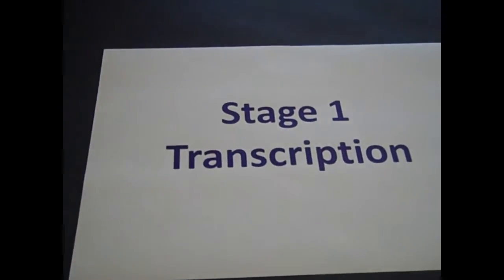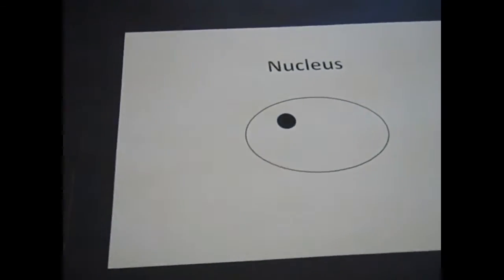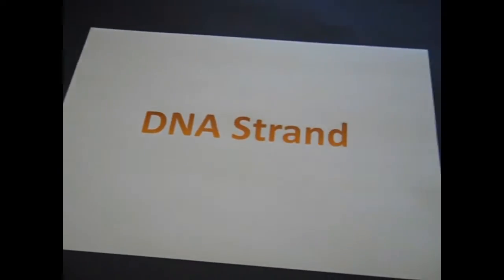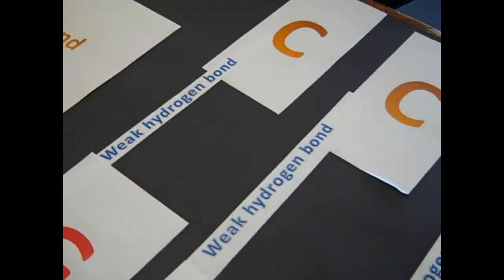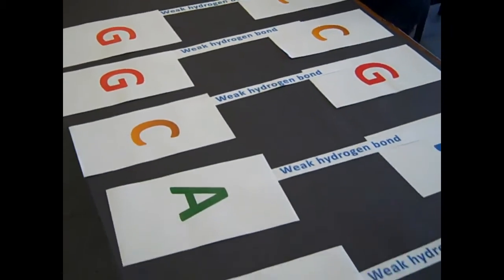There are two main stages in protein synthesis, the first being transcription. This happens in the nucleus, and in the nucleus there are DNA strands. In the DNA strands there are complementary base pairs that are bonded together through weak hydrogen bonds.